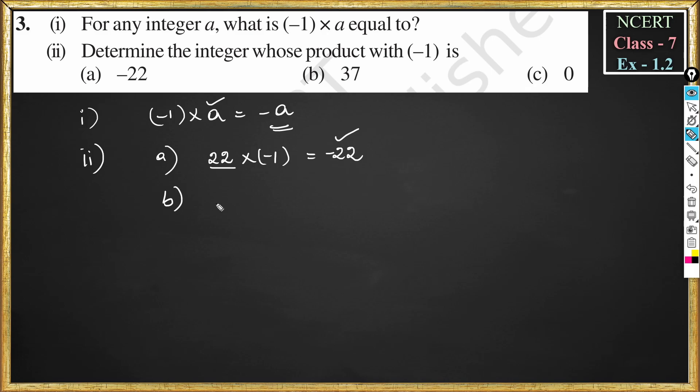Similarly, for part B, the integer which when multiplied with minus one becomes 37. 37's additive inverse is minus 37, so the answer is minus 37.